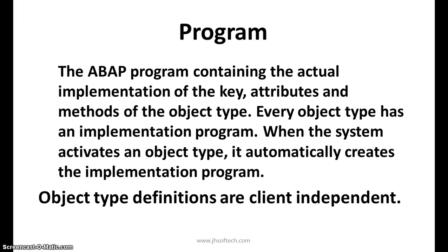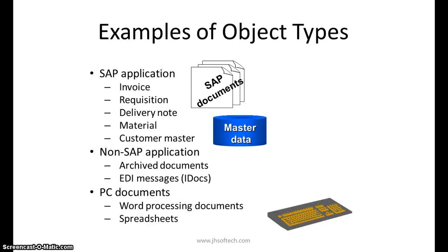Any static program can be used for a BAPI. When the system activates an object type, it automatically creates the implementation program. For example, an invoice is a document and therefore an object type; a requisition is a document and can be considered an object type. We have examples like delivery note, material, and material data as object types. Non-SAP applications, archive documents, and EDI messages are all object types.